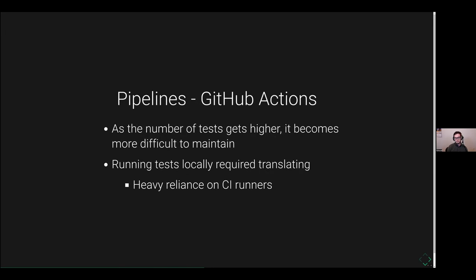As the number of tests goes up, it becomes more complicated to maintain. You start coming up with all these fancy matrices, things start breaking, and it's hard to keep track of what's going on in the jobs. You can see CERIC as an example of that with all the various tests they had maintaining their huge pipeline. Running tests locally meant translating the workflow YAML to a Nextflow command, and running multiple tests required doing that several times. This also had a heavy reliance on CI runners rather than using them as a check.